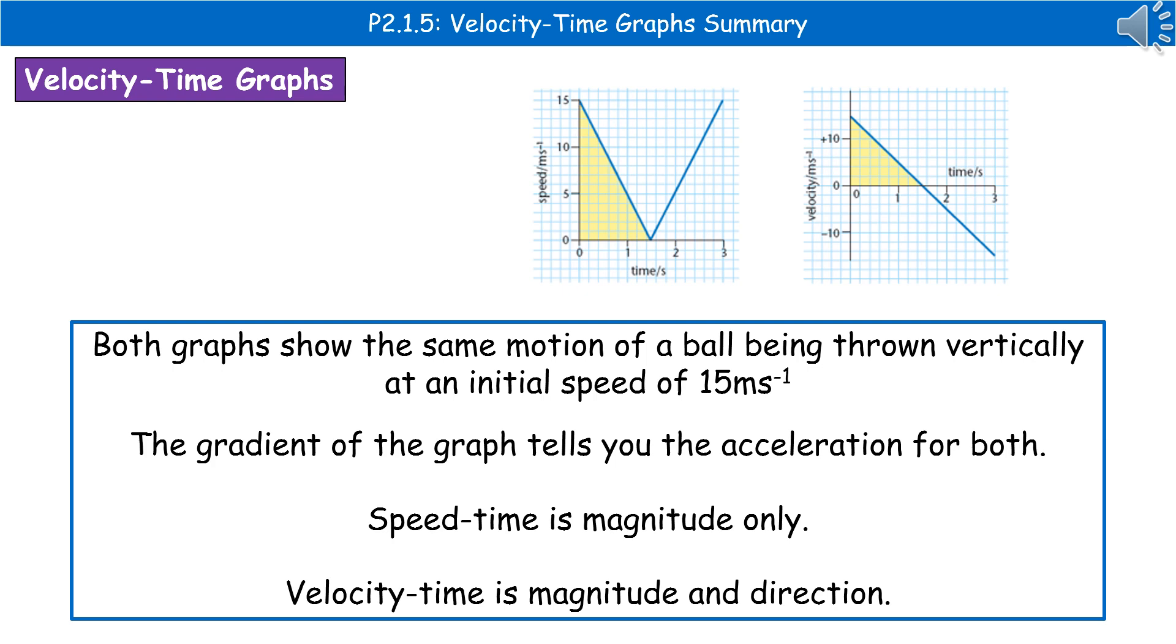The speed-time graph only gives us magnitude, so it only tells us the size. Whereas the velocity-time graph gives us both magnitude and direction. Hence why it goes beneath the x-axis into negative values.